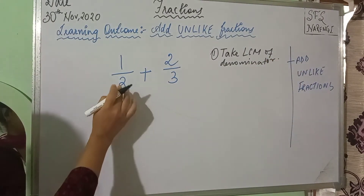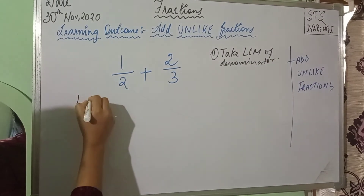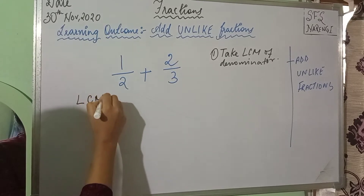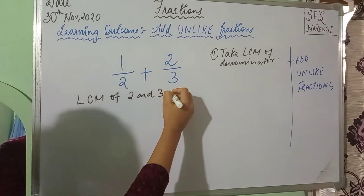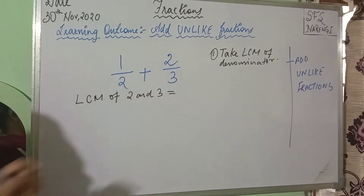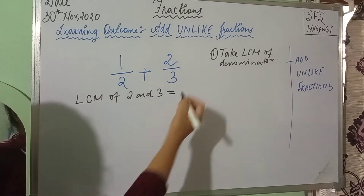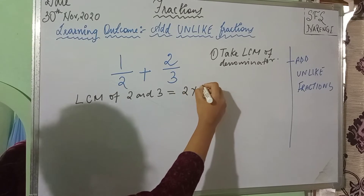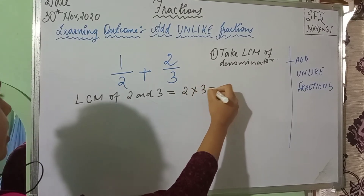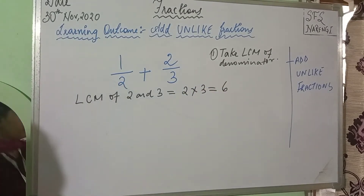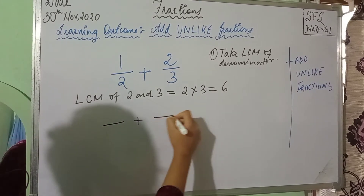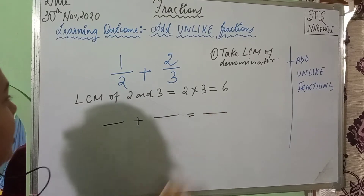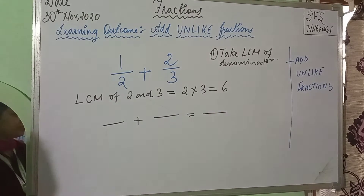So, what is the denominator here? 2 and 3. The LCM of 2 and 3 — since 2 and 3 are both prime numbers — the LCM will be 2 multiplied by 3, that is equal to 6.